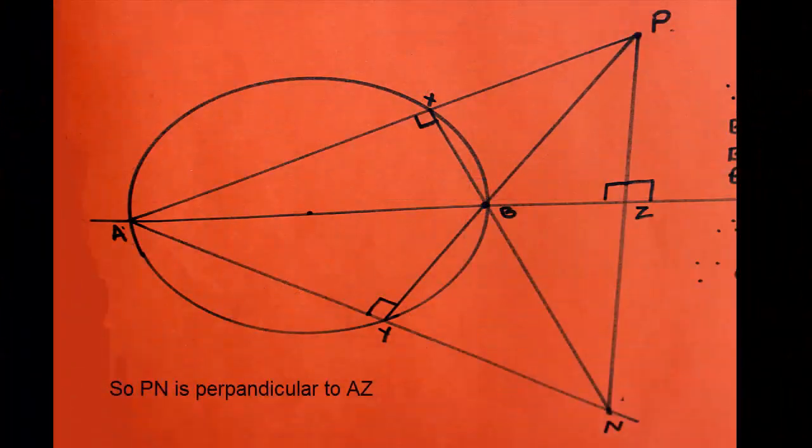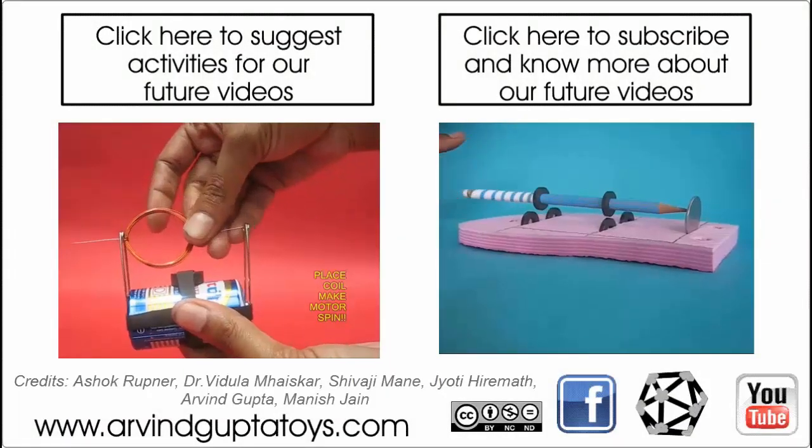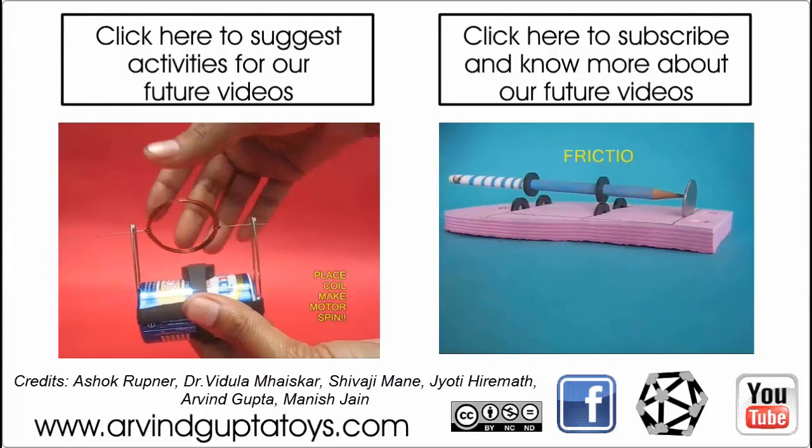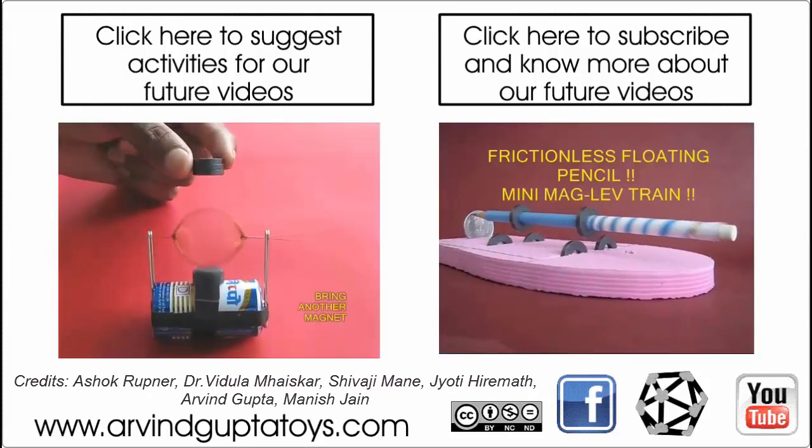So for this activity, we use the property that the triangle inside a semicircle is a right triangle, and all three altitudes of a triangle pass through the same point, which is called the orthocenter. Hope you enjoyed the activity. Thank you.